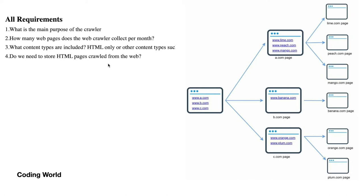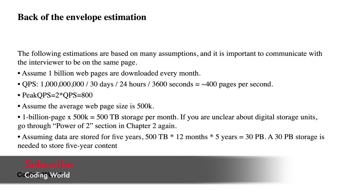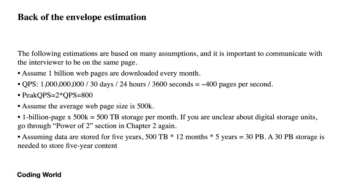Now let's do the back-of-the-envelope estimation. If we assume one billion web pages are downloaded every month, that works out to about 400 pages per second. If each page is approximately 50KB, downloading one billion pages gives us 500TB of data. If we store that data for five years, it becomes 30 petabytes. This storage requirement must be considered while designing your system.